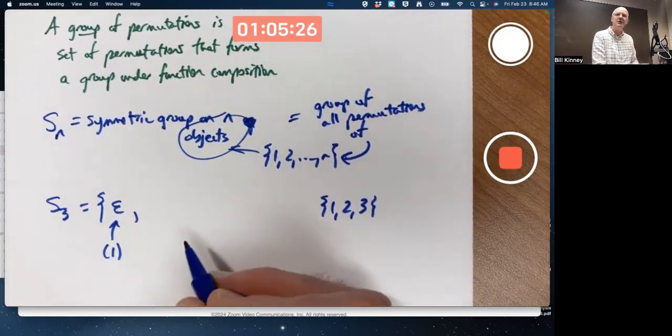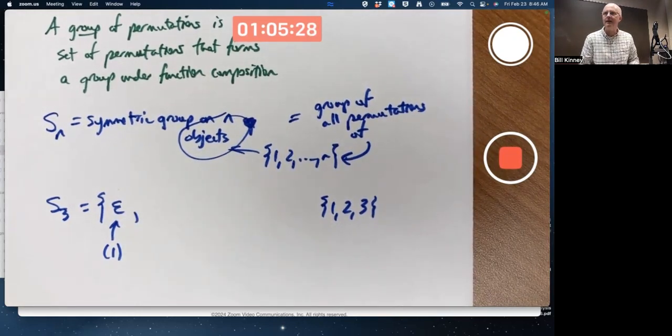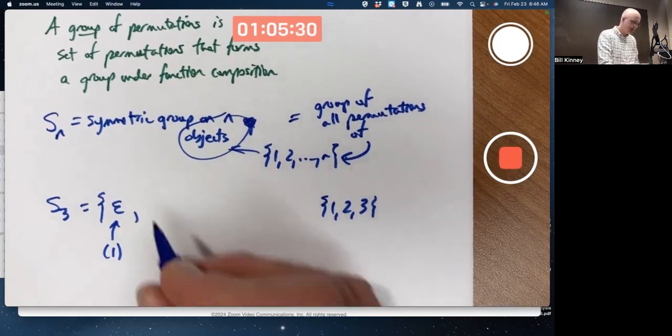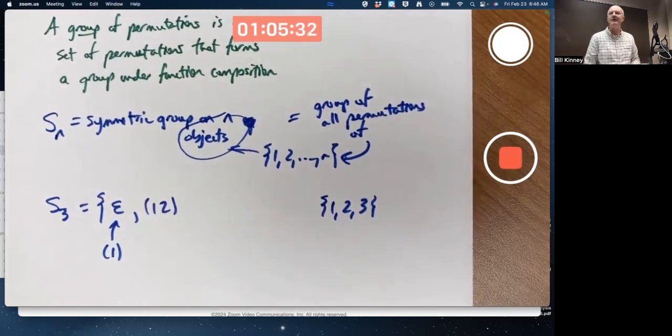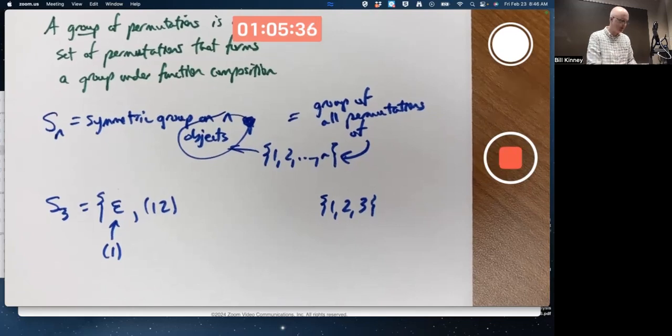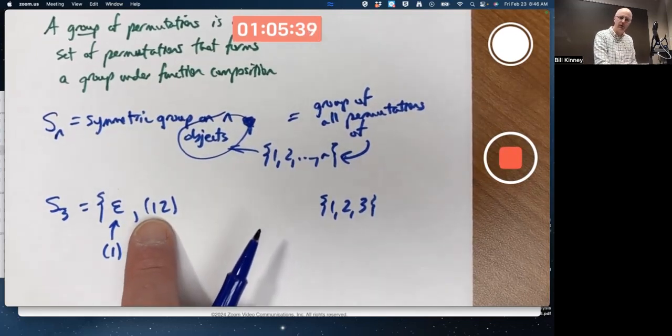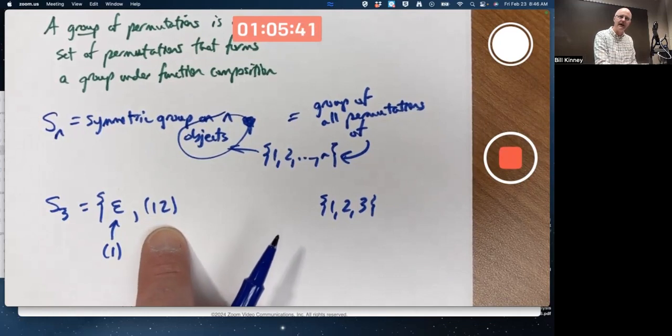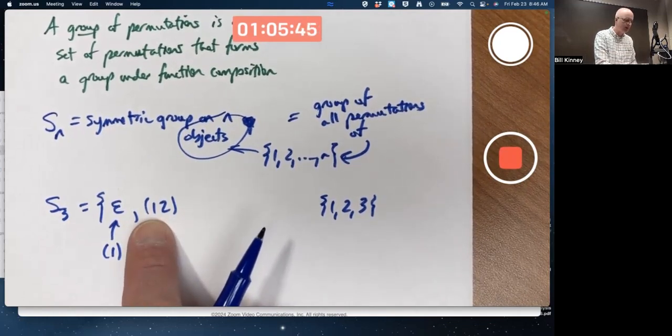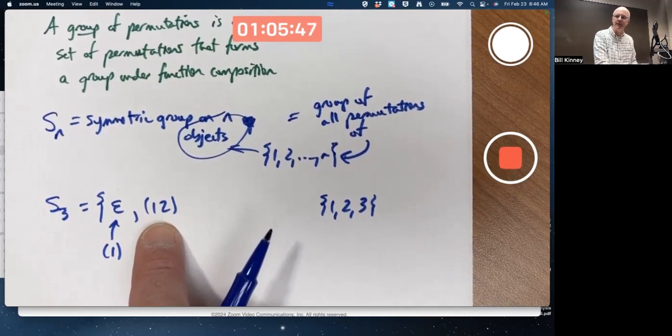We could map 1 to 2 and 2 to 1 and 3 to itself. This cycle (1 2) would represent that function. 1 gets mapped to 2, 2 gets mapped back to 1, and 3 gets mapped to itself. You work from left to right, and when you get to the end, you go back to the beginning. 1 gets mapped to 2, 2 gets mapped back to 1. 3 is not shown, so 3 gets mapped to itself.